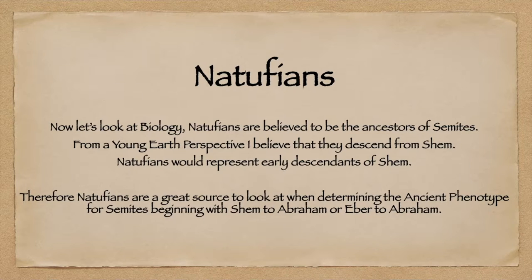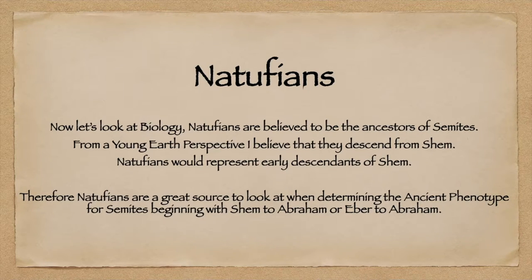Now let's look at the Natufians. When it comes to the biology of Natufians, it is believed that Natufians are the ancestors of Semites. From a Young Earth perspective, I believe they are the descendants of Shem — Natufians would represent the early descendants of Shem. Therefore Natufians are a great source to look at when determining the ancient phenotype for Semites, beginning with Shem to Abraham, or Eber to Abraham.